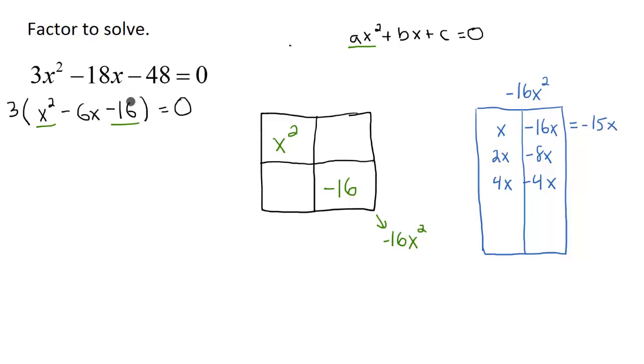2x - 8x is going to be -6x, which is exactly what we need. So I take these two terms now and I'm going to plug them into my two remaining boxes.